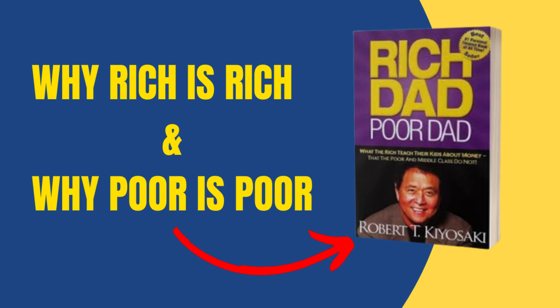The book also encourages readers to develop multiple streams of income, such as starting a business, investing in real estate, or investing in stocks. The Rich Dad character teaches Robert that having multiple streams of income is key to building wealth and achieving financial freedom.